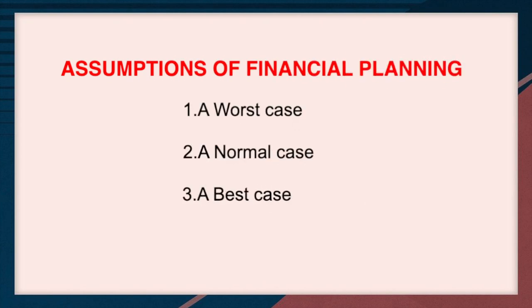Coming to assumptions of financial planning: financial plans always consider an alternative set of assumptions. The assumptions are a worst case, a normal case, and a best case. In a worst case, the plan requires making the worst possible assumptions about the company's products and the state of the economy. In a normal case, the plan requires making the most likely assumptions about the company and economy. In a best case, the plan requires making the most optimistic assumptions.